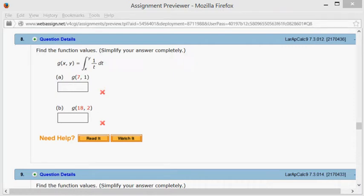Alright, let's look at the Hallmark 7.2, 7.3, problem number 8. So we have this function of two variables, and we just want to evaluate it at 7,1 and 18,2. Alright, so let's do that.